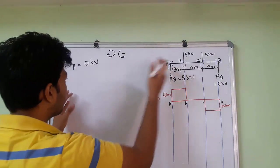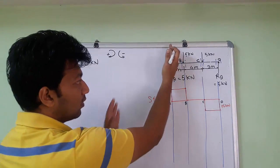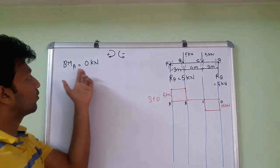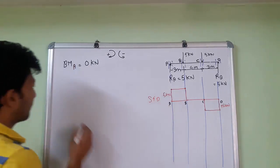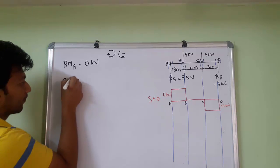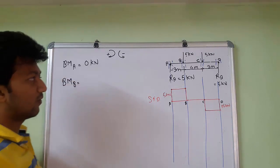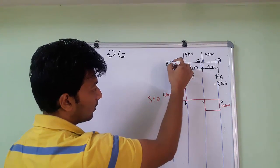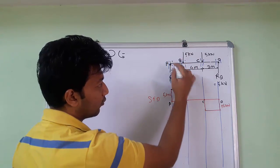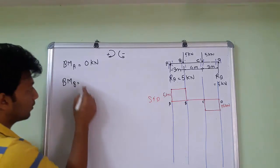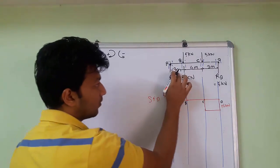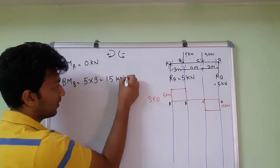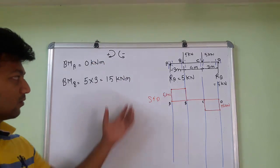To find the bending moment at point A, we consider only this section — there is no force, so bending moment at A equals 0. For bending moment at B, we consider this portion. The 5 kN at RA gives a clockwise moment, which is positive: 5 into distance 3 equals 15 kN·m.